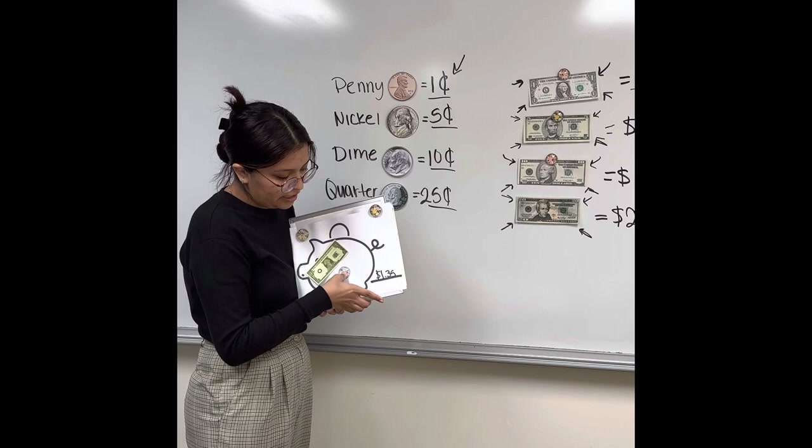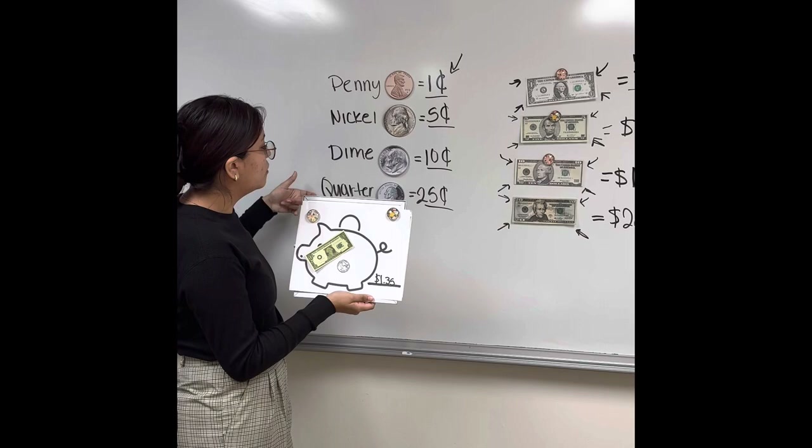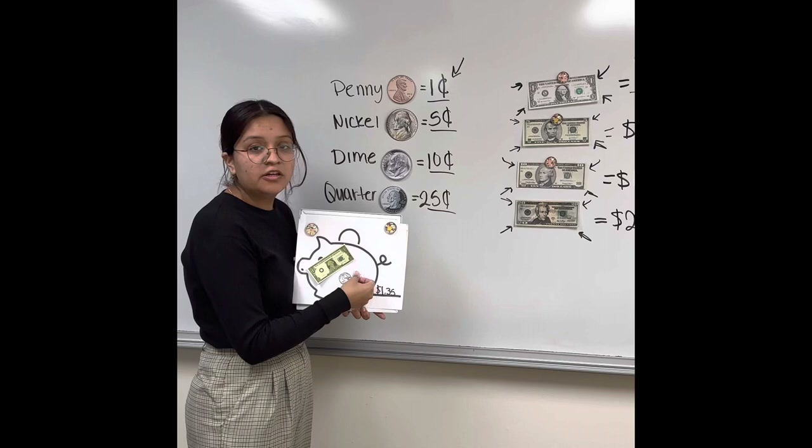So now we have twenty-five cents, which means we have ten cents left. Which coin would we use — penny, nickel, dime, or quarter? The dime. Great job. And what's the value of a dime? Ten cents. Great job. So twenty-five plus ten equals? Thirty-five. Great.